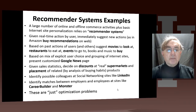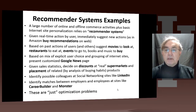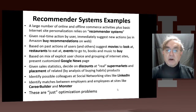Here we start off with a slide of examples. A lot of commerce activities — and that commerce varies from books through electronics through movies — are dominated by recommender systems. Also, basic internet site personalization relies on recommender systems, which suggest what things to assign to the page that the person is looking at. The obvious example is Amazon, which probably first popularized this with the buy recommendations they have on the web.